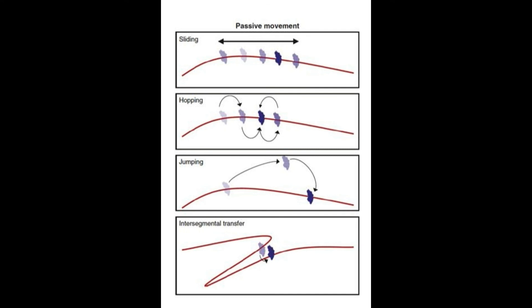There are multiple observed modes of motion. Sliding is a passive one-dimensional diffusion movement covering around 50 base pairs. Hopping covers about 10 base pairs to reach the next site. Jumping covers more than 100 base pairs and represents three-dimensional diffusion over a large area. Finally, intersegmental transfer occurs with the proximity of multiple strands folded upon or close to each other.